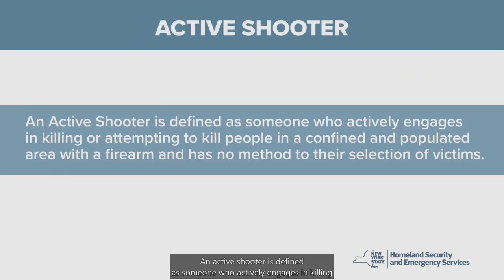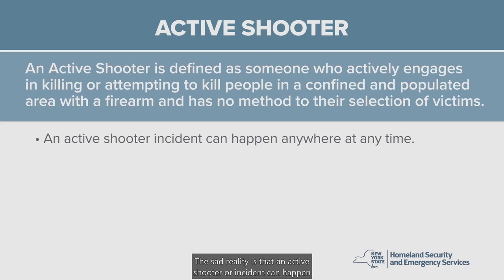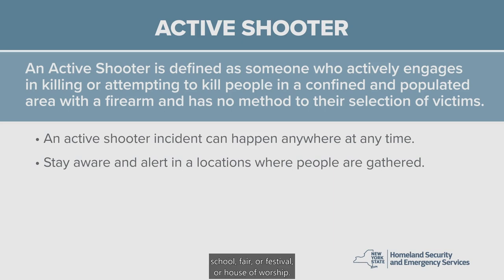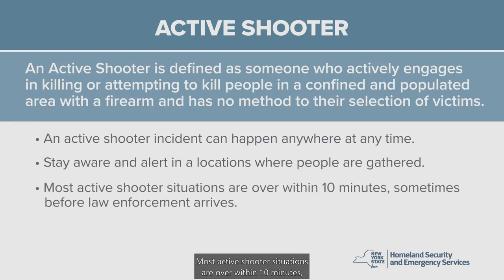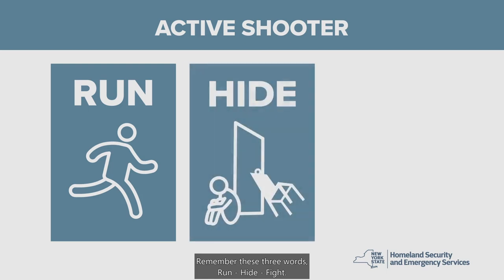An active shooter is defined as someone who actively engages in killing or attempting to kill people in a confined and populated area with a firearm and has no method to their selection of victims. An active shooter incident can happen anywhere at any time, so it's important to stay aware and alert whenever in a location where people are gathered — such as a shopping center, hospital, office building, club or restaurant, school, fair or festival, or house of worship. Most active shooter situations are over within 10 minutes, sometimes before law enforcement arrives. Individuals must be mentally and physically prepared. Remember these three words: Run. Hide. Fight.